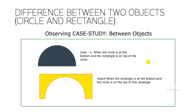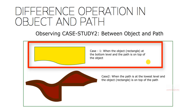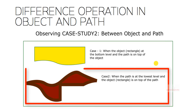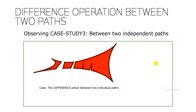Next, we will be observing the same result and effect of the difference operation when the interacting elements are an object and a path. Case one is when the object rectangle is at the bottom level and the path is on top of that object, and case two is when the path is at the lowest level and the object is on top of the path. Something similar will be observed when the difference operation is applied between two individual paths.